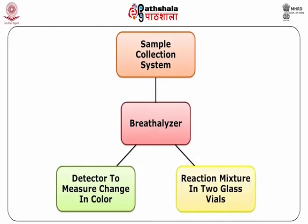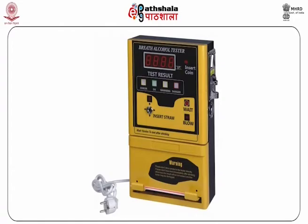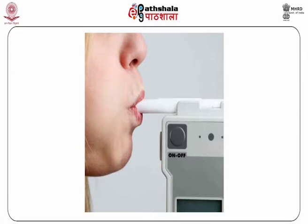First, the breathalyzer. The device contains a sample collection system, a reaction mixture contained in two glass vials, and a detector to measure the change in colour of the reaction mixture. The breathalyzer is a device for collecting and measuring the alcohol content of alveolar air. When the valve is in the take position, the subject is made to blow into a mouthpiece coupled with a metal cylinder. As the subject blows, the pressure of the exhaled alveolar breath raises the piston to a height so that it exposes two vent holes near the top of a heated cylinder.